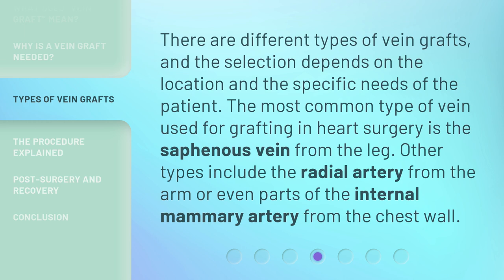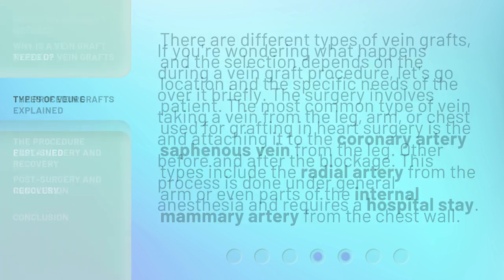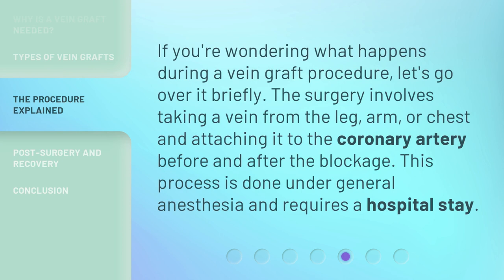If you're wondering what happens during a vein graft procedure, let's go over it briefly. The surgery involves taking a vein from the leg, arm, or chest and attaching it to the coronary artery before and after the blockage. This process is done under general anesthesia and requires a hospital stay.